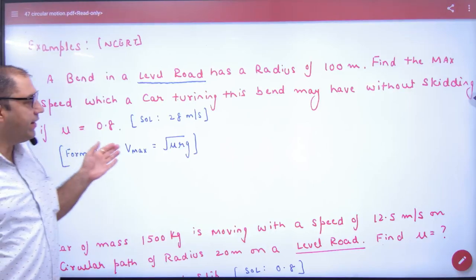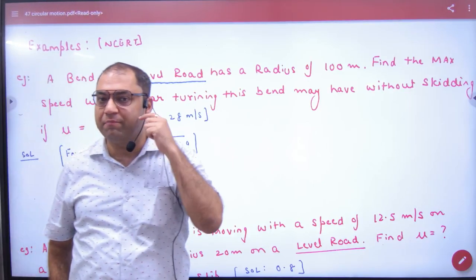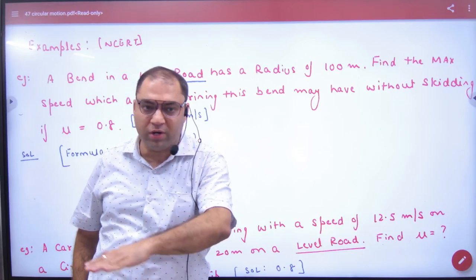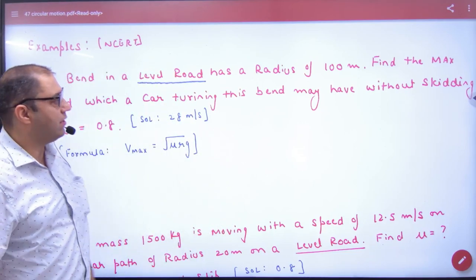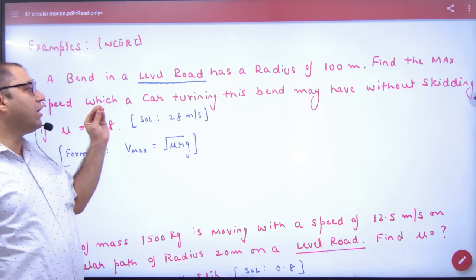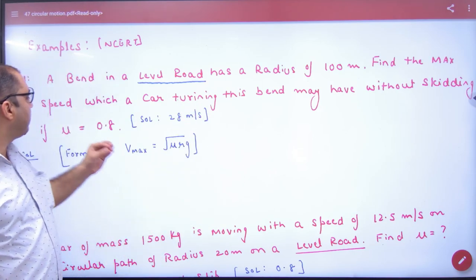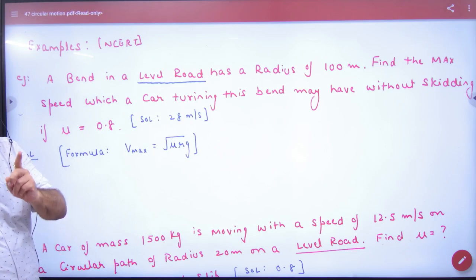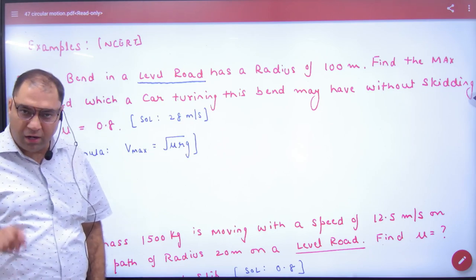In numericals, bend in a level road. Please remember, bend in a level road means the road is leveled, banking case is not. Radius is given, find maximum speed which car turning this bend may have without skidding. Mu is given. What was the formula? Under root of mu Rg.